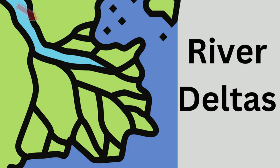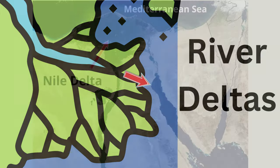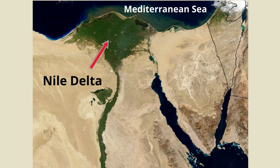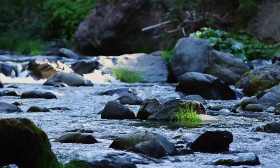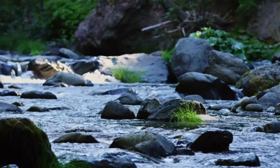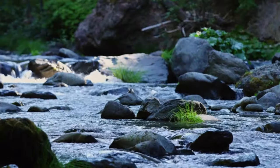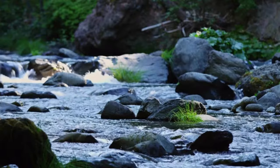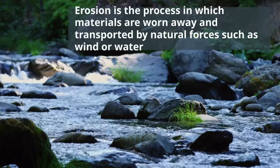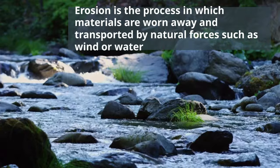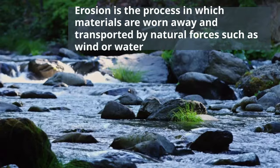River deltas form when a river carrying sediment reaches a body of water, such as a lake or an ocean. As the river flows, it picks up small particles, rocks, sand, and other items created from weathering and erosion. Erosion is the process in which materials are worn away and transported by natural forces, such as wind and water.